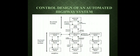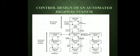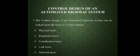Now we will look at the control design of the automated highway system. Before going to the block diagram, we will go through the five-layer theory. These layers are introduced in the control design of the automated system. The first is the physical layer, the second is the regulation layer, the third is the coordination layer, the fourth is the link layer, and the fifth is the network layer.